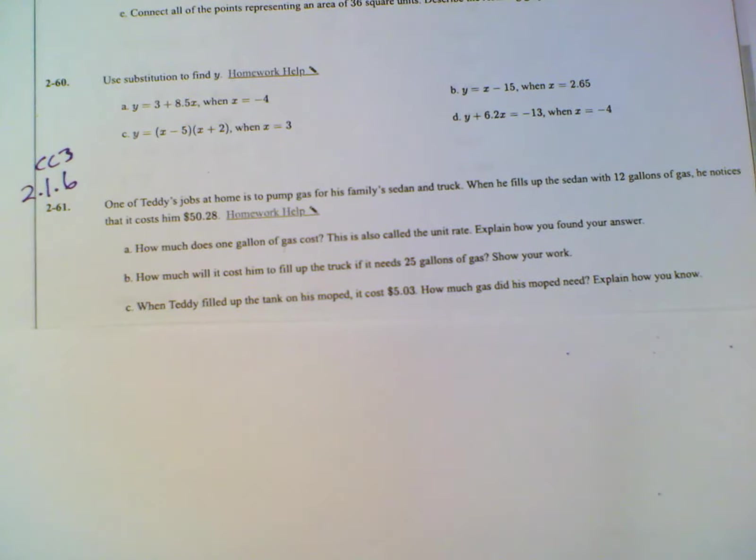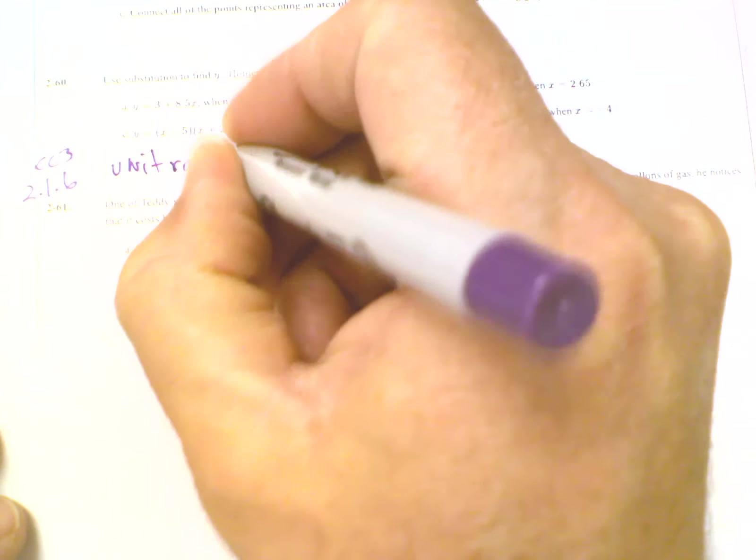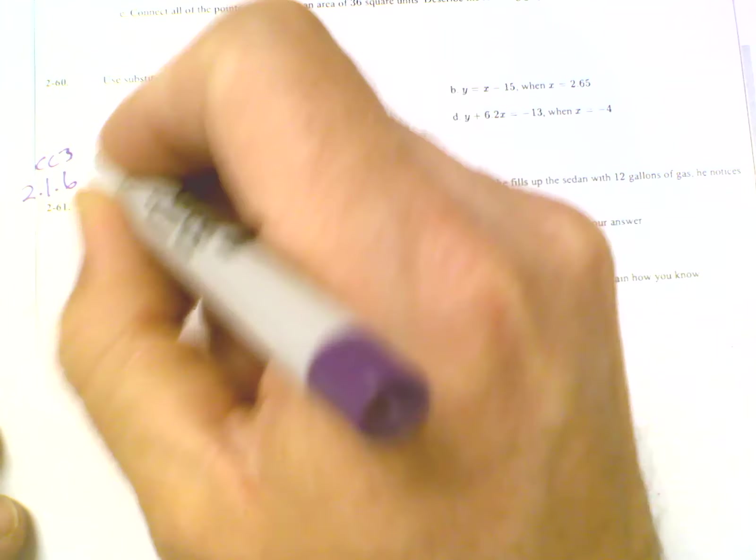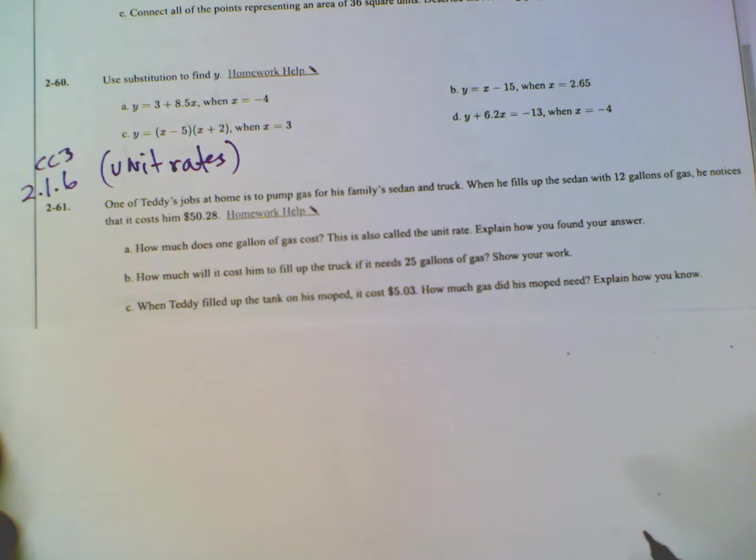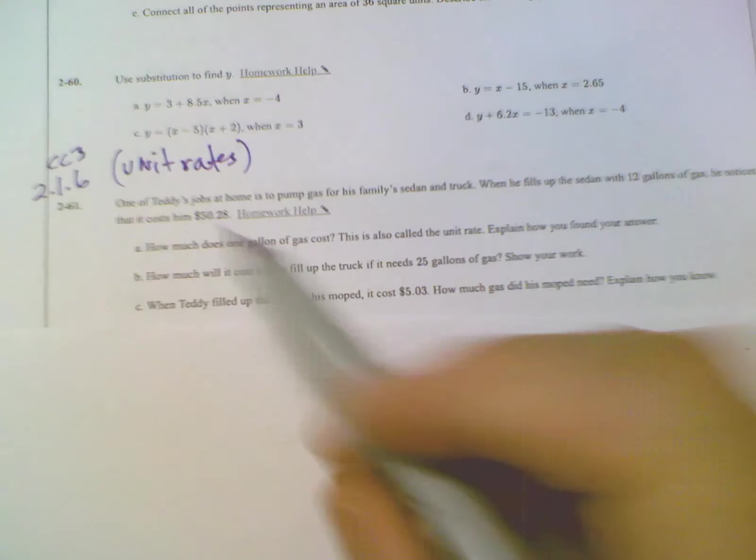All right, we are looking at CC3 2.1.6, section 2.1.6, 2-61. Specifically, I wanted to make sure we're reviewing unit rates, how to do unit rates, and that's going to be part of this problem. So I figured I might as well do one from your book in reviewing unit rates.